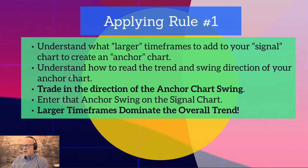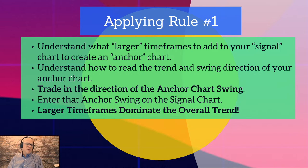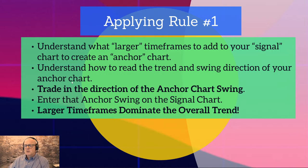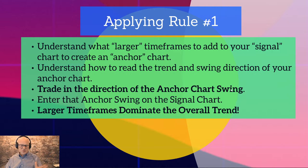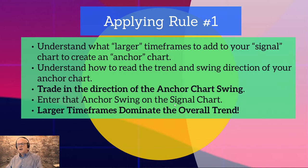The anchor chart sets the direction we're going to trade. Rule number one says larger timeframes dominate the trend. When we have a trend with pullbacks, that trend sustains and every pullback gets pulled back in the direction of the trend. The signal chart tells us when we have an opportunity to get back in the direction of the trend. If you're day trading, the anchor might be a 10-minute chart and the signal a 1-minute chart; swing trading might use weekly anchor and daily signal. Trade in the direction of the anchor chart swing.